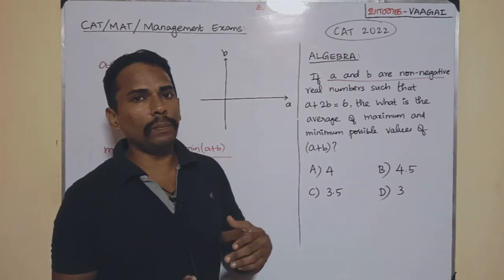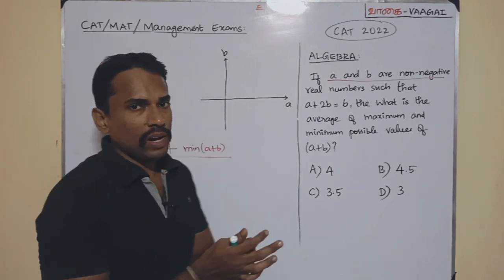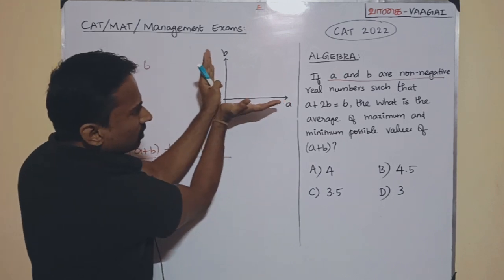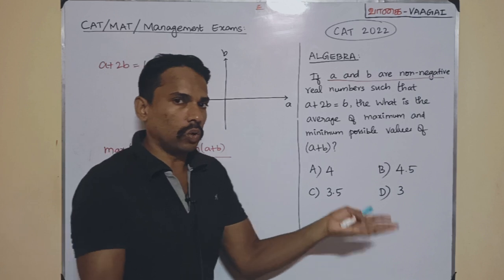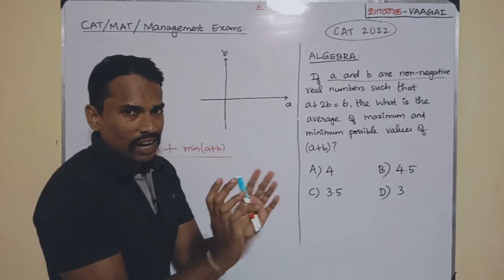Then definitely, how will be the values of A and B? They will be definitely between these two axes only. They are intercepted between the axes. So, this we can very clearly understand.